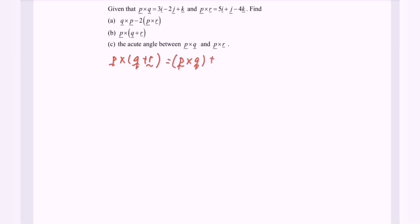Next, focus on B. We have vector P crossed with bracket vector Q plus vector R. Expanding: vector P crossed with vector Q, plus vector P crossed with vector R. Substituting: P×Q is (3, -2, 1) plus P×R is (5, 1, -4). Summing up, we have (8, -1, -3).